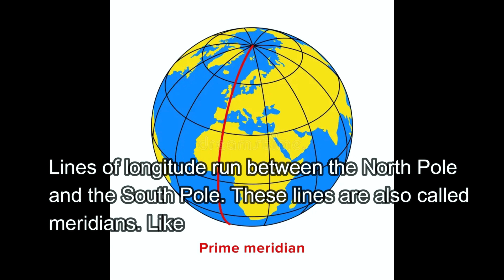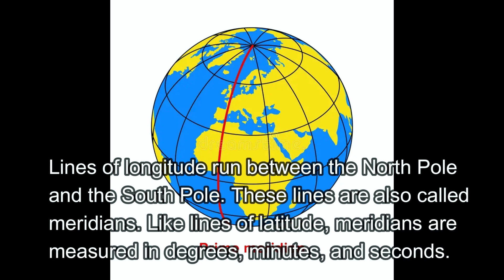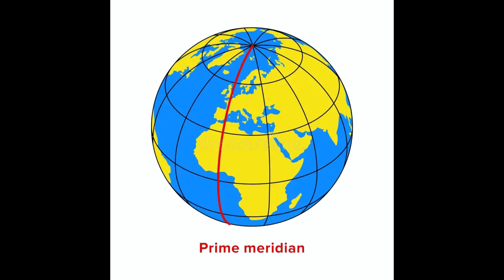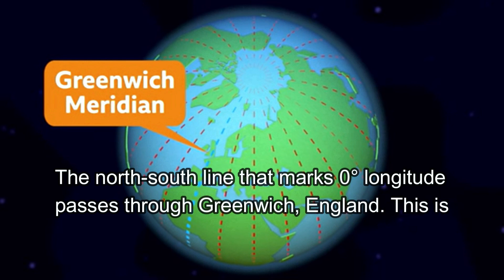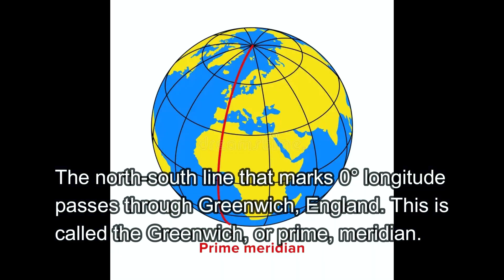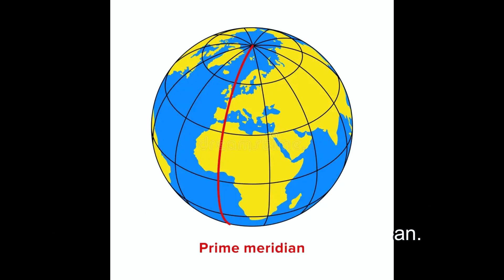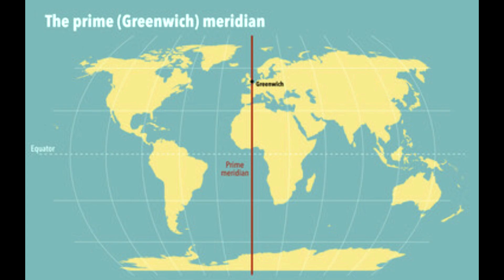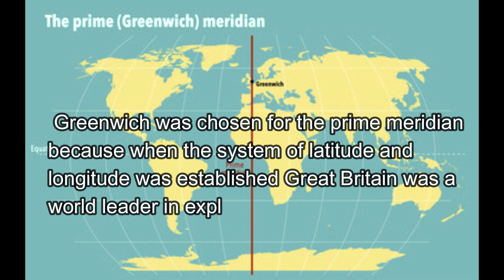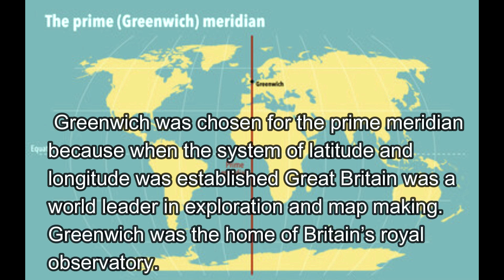The Prime Meridian. Lines of longitude run between the north and south poles and are also called meridians. Like lines of latitude, meridians are also measured in degrees, minutes, and seconds. The zero degree longitude passes through Greenwich, England, and is called the Greenwich or Prime Meridian. Greenwich was chosen for the Prime Meridian because when the system of latitude and longitude was established, Great Britain was well ahead in exploration and map making, and Greenwich was the home of Britain's Royal Observatory.